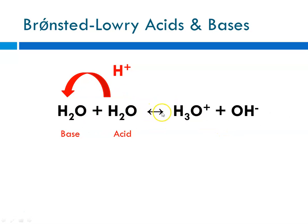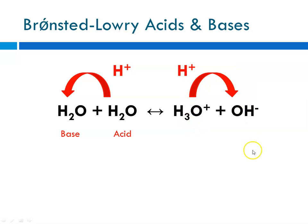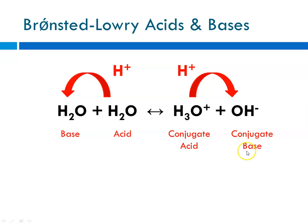Remember that these are equilibriums, so this is a reversible reaction. In the reverse direction, we follow the proton again — the proton goes from the hydronium ion over to the hydroxide ion. In this case, this species is the conjugate acid; it has one more proton than its base counterpart. The hydroxide ion is acting as the acceptor, so it is the conjugate base, which has one less proton than its acid counterpart.